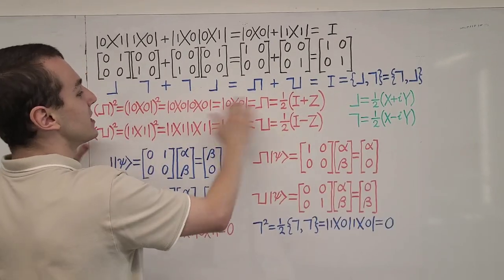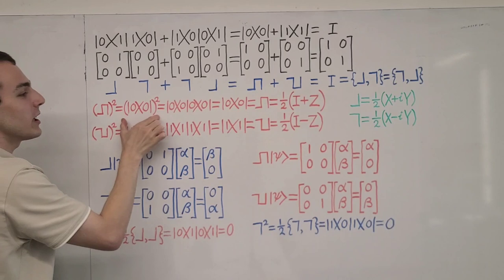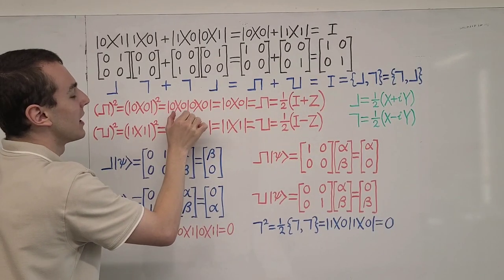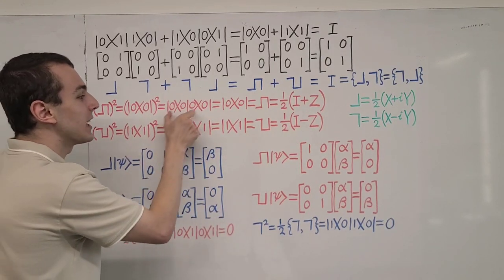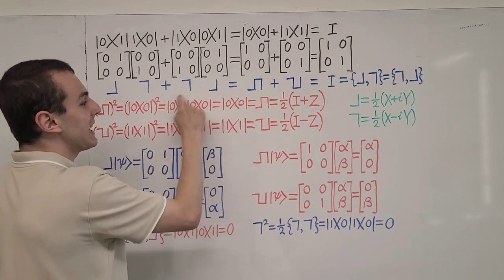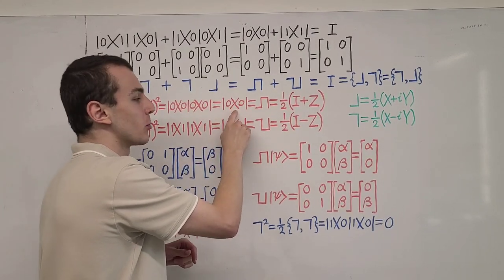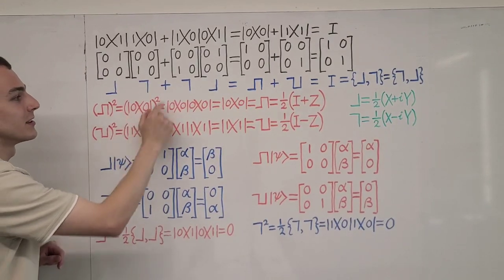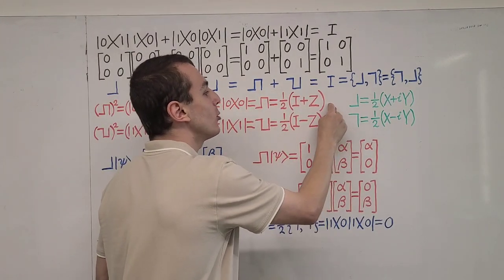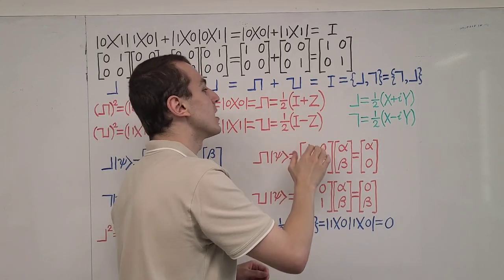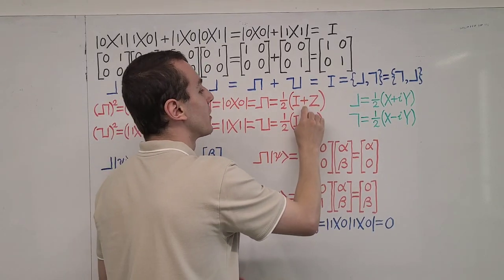Let's reason through why this is true. If we take this projector and square it, we can rewrite this in terms of kets and bras — a ket-bra followed by a ket-bra. We can observe that an inner product appears in the middle, and because of normalization we can evaluate that to one. We're left with what we started with, so this is exactly the same as the original projector. This is the same as its square.